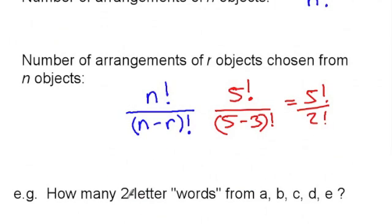And similarly if we wanted to know how many two letter words we could make from the letters a, b, c, d and e, and this is permutations again, that would be five factorial over five take two factorial.